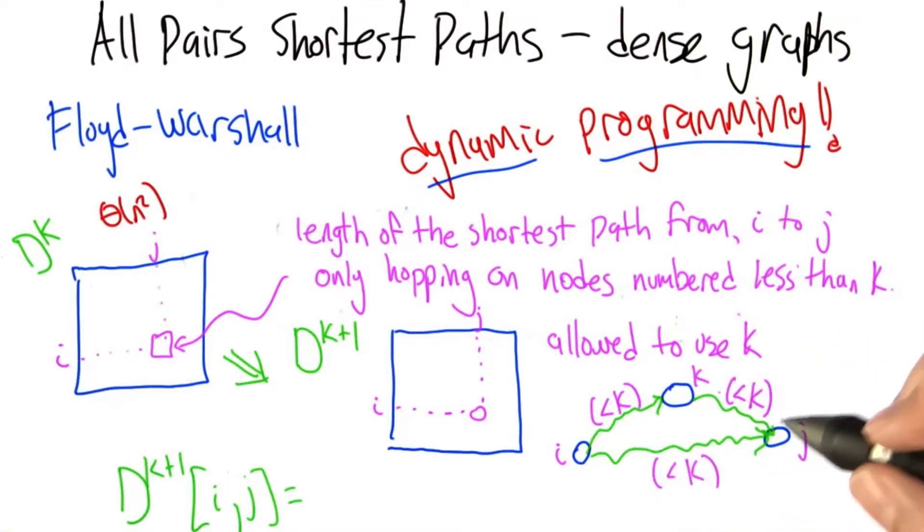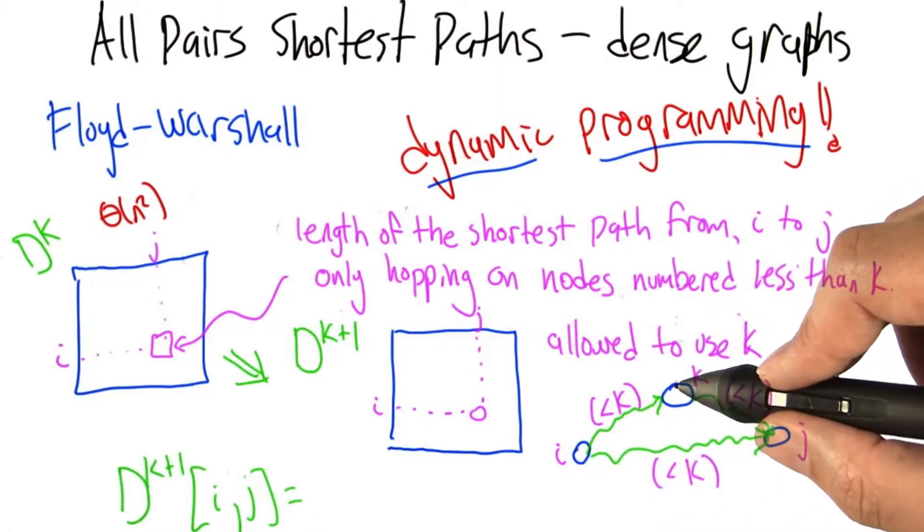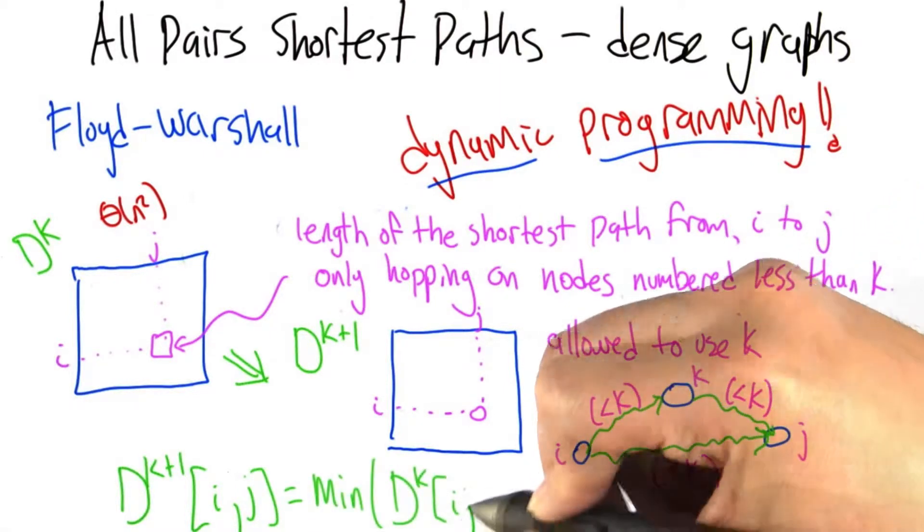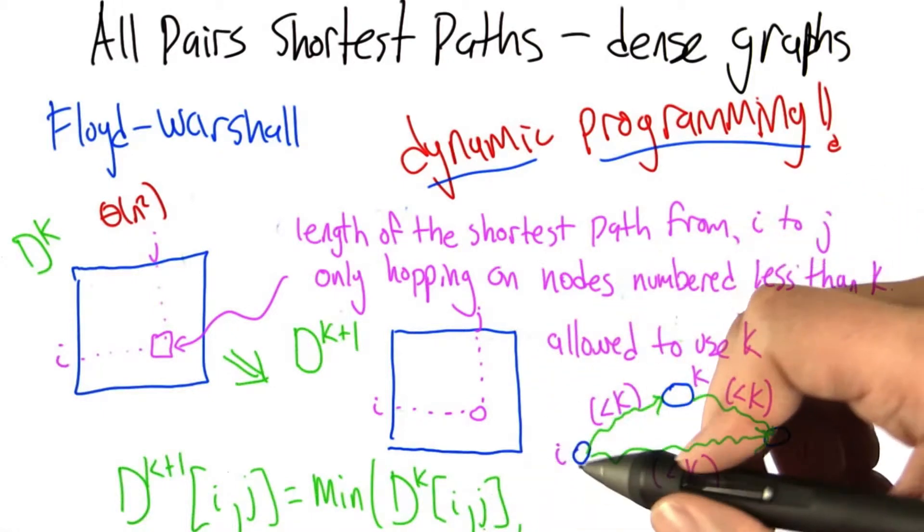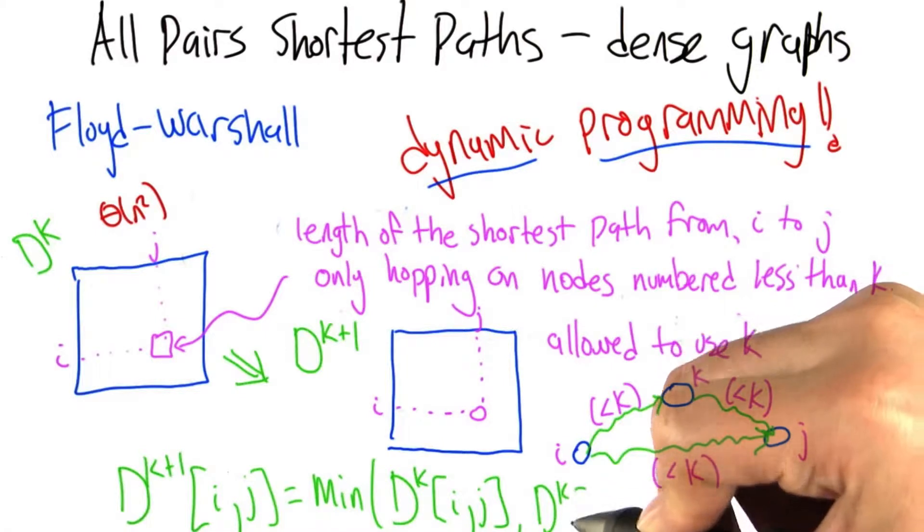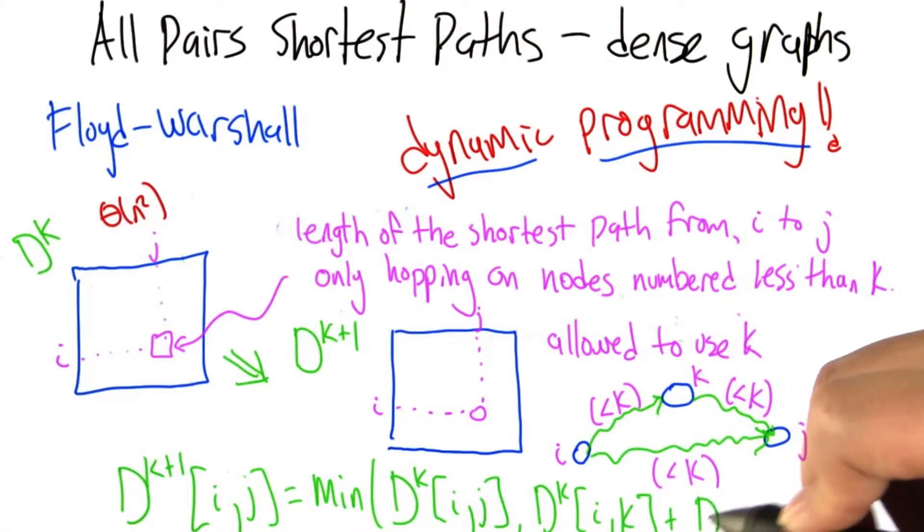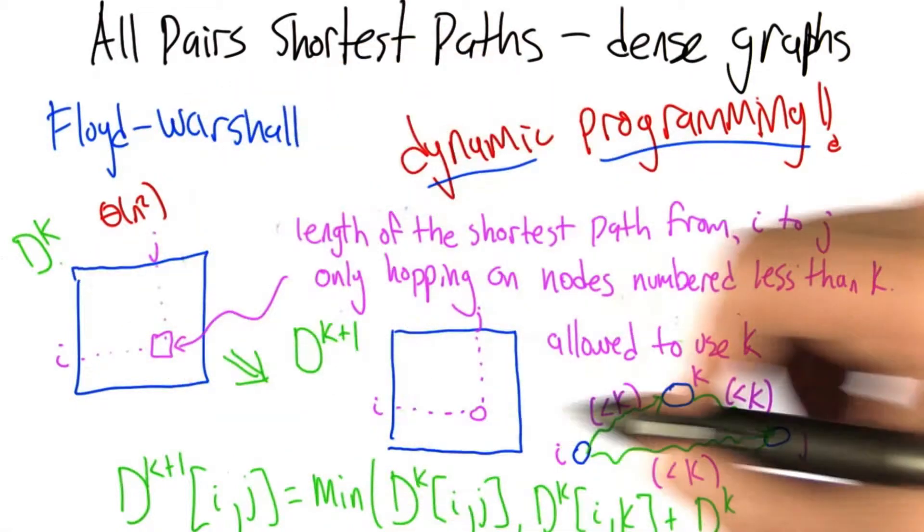Those are the two possibilities. Whichever one is shortest—the shortest path from i to k followed by the shortest path from k to j, or the shortest path from i to j—whichever is shortest is the shortest path from i to j possibly using k and things less than k. We can just write that in a straightforward way by taking advantage of the fact that someone has given us D^k, the matrix D^k.